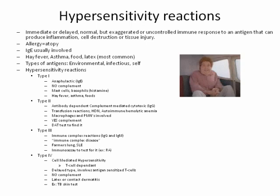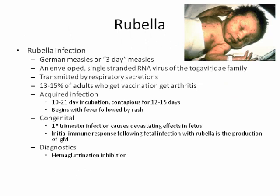Know the four types of hypersensitivity: Type 1 is anaphylactic — hay fever, asthma, bee stings, foods. Type 2 is cytotoxic antibody-dependent — hemolytic disease of the newborn, transfusion reactions. Type 3 is immune complex diseases — lupus and farmer's lung. Type 4 is cell-mediated — TB skin test, latex allergies, or any other contact dermatitis.